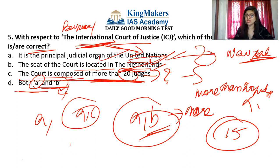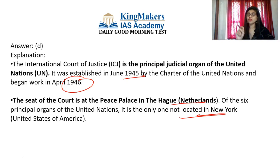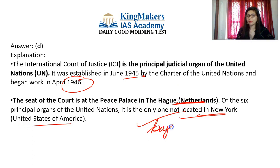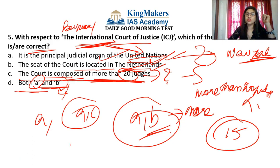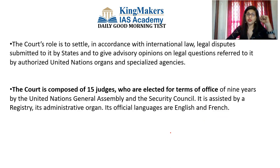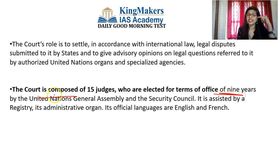The answer is option B: only statements 2 and 3 are correct. Statement 1 is wrong because of the keyword 'RBI' — the MPC is actually constituted by the Central Government, as per Section 45ZB of the amended RBI Act of 1934. The quorum for MPC meetings is four members. Each member has one vote, and in the case of equality of votes, the Governor has a second or casting vote — that is the Governor's exclusive discretionary power.